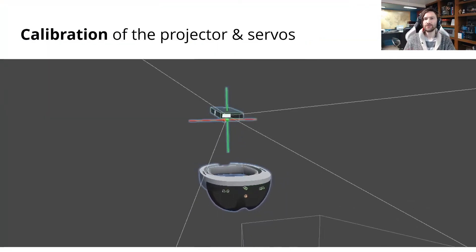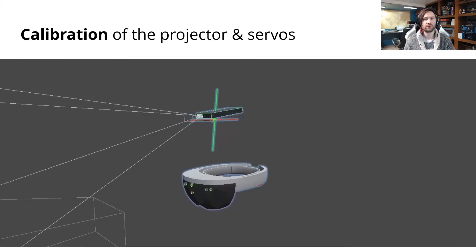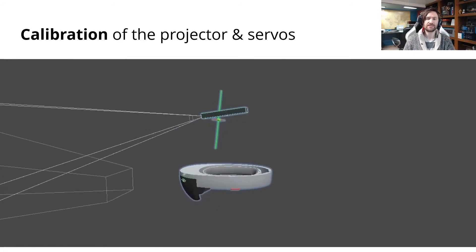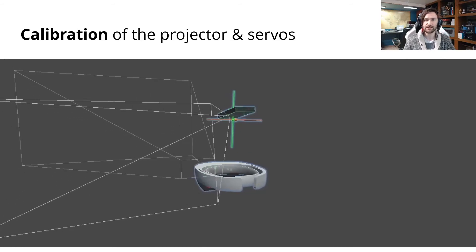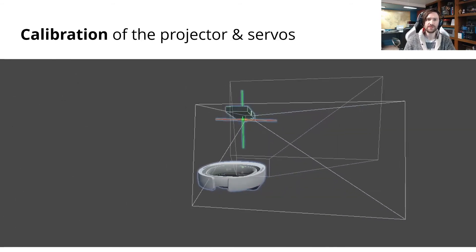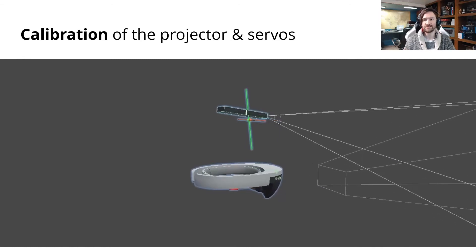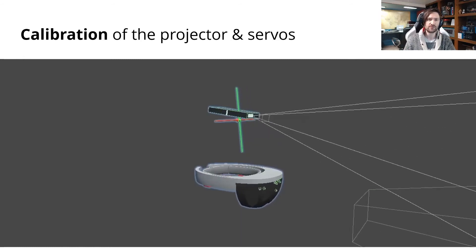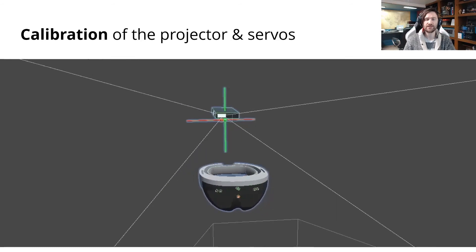To enable all of these usage scenarios, a one-time calibration is required to recover the servo's positions and axes of rotation, along with the location of the projector's frustum relative to the HMD. Together, the calibrated geometric relationships are used for precise movement control in our software toolkit. Please see the paper for details on how this is accomplished.